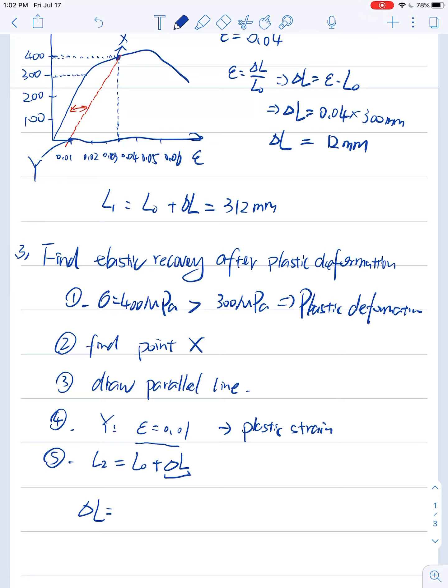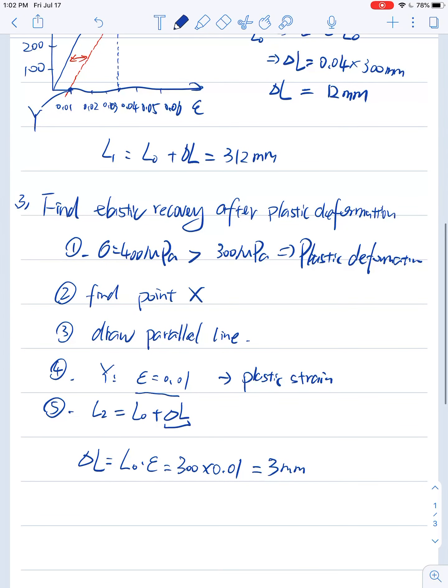Now, the goal is to find out what is delta L here. Delta L can be found by using the original length times the strain here, 300 times 0.01. And that will give you about 3 mm.